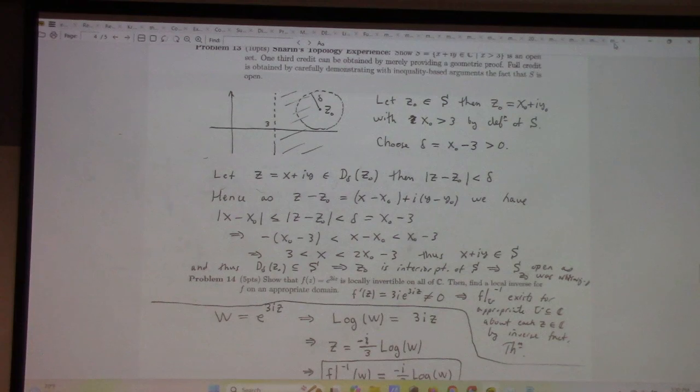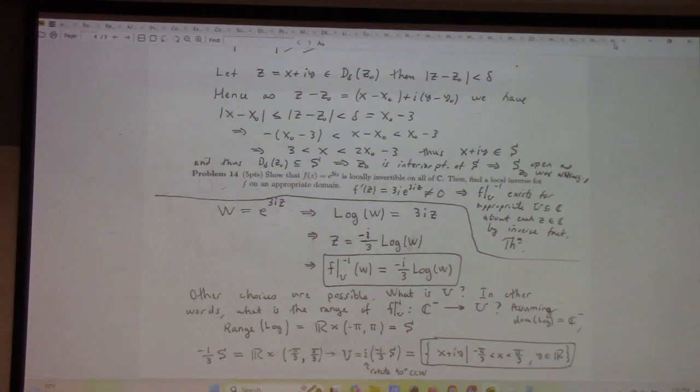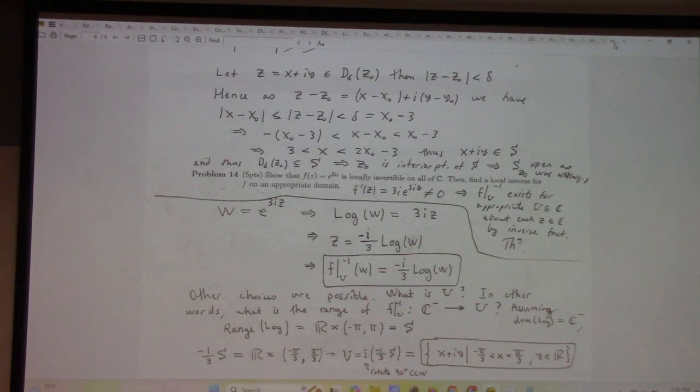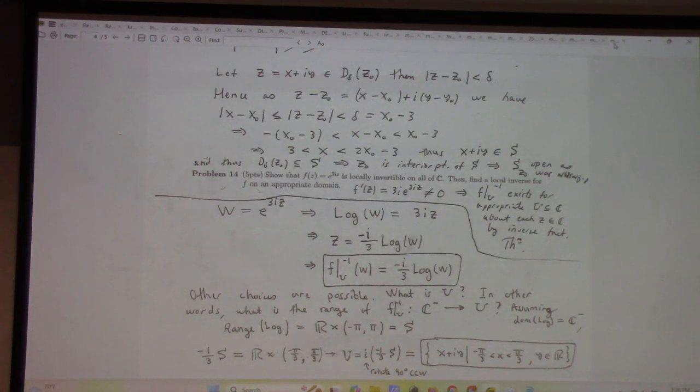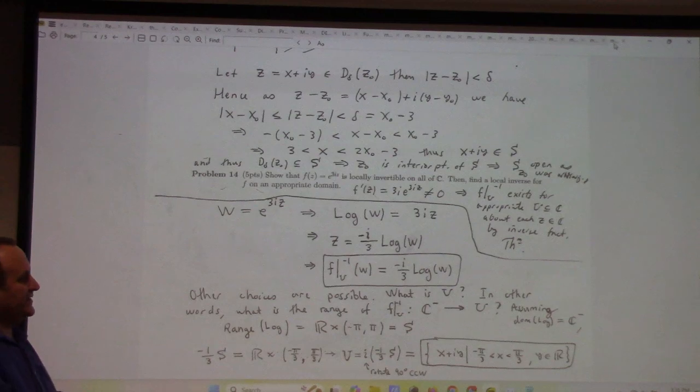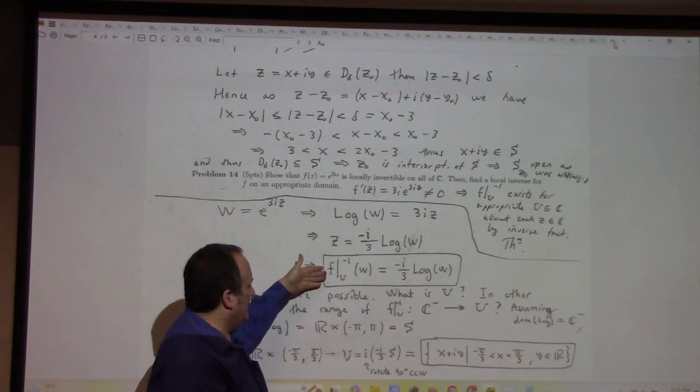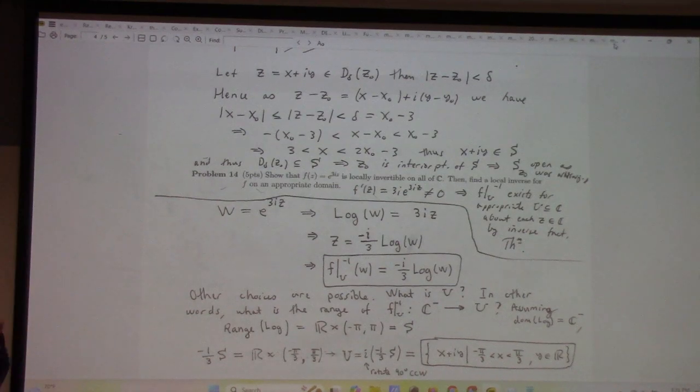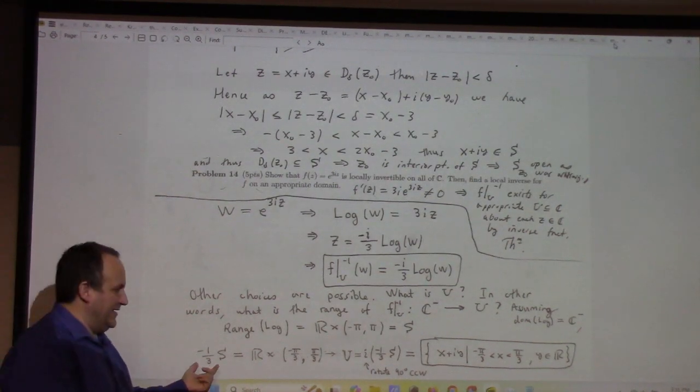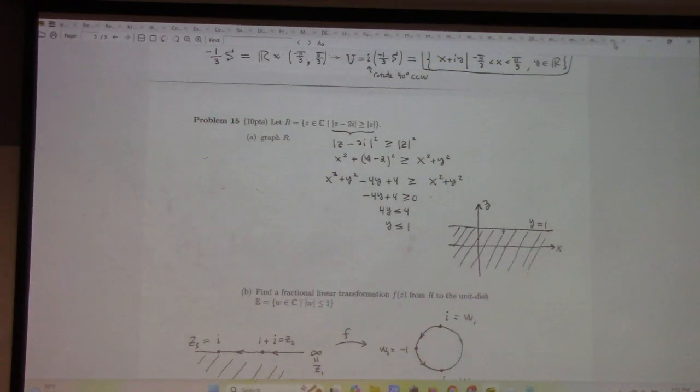Show f of z equals e to the 3i z is locally invertible on all of c, and then find a local inverse of f on appropriate domain. So, to show that it's complex, so it's invertible everywhere, the derivative is non-zero everywhere. So, by the inverse function theorem, a local inverse exists. What is that inverse function? Well, you've got to solve for z. And to solve for z, I used a principal log, and that only, of course, is going to be legitimate for a particular domain, right? In this case, I worked it out. It has to be that. That's the domain on which that inverse works.